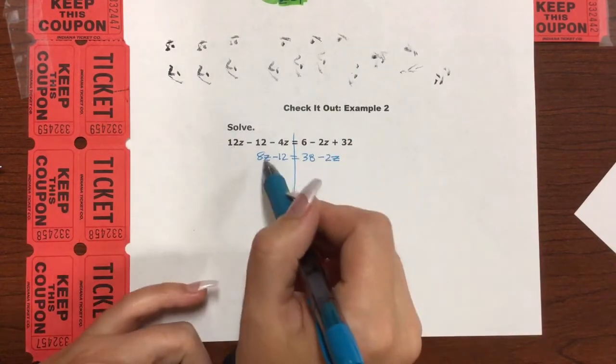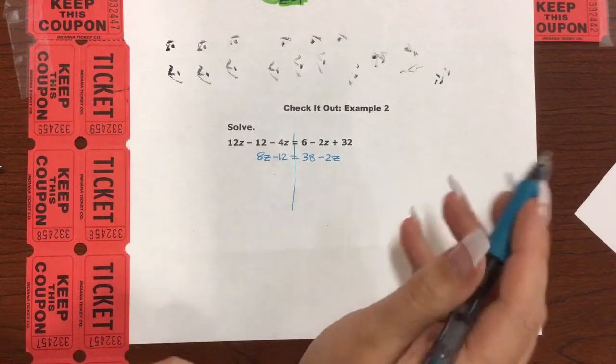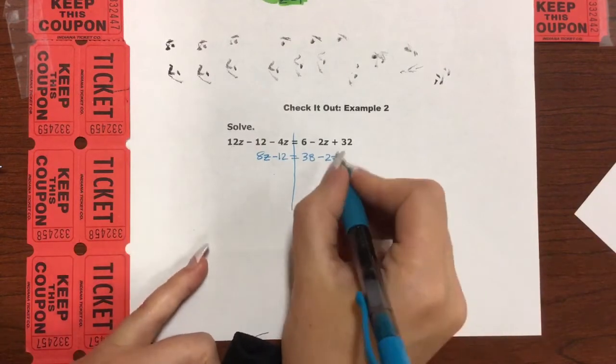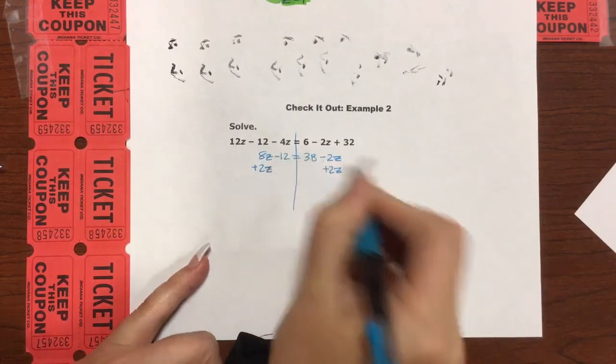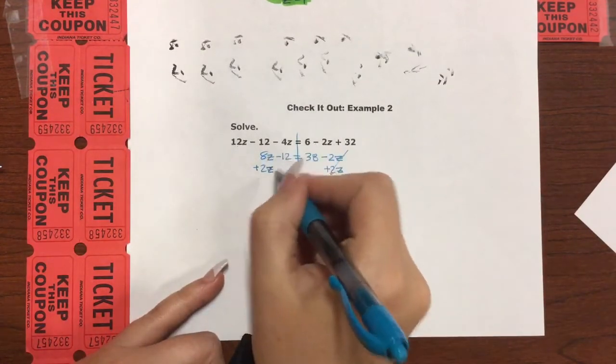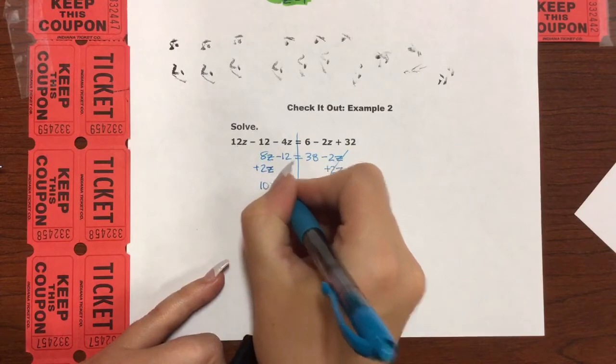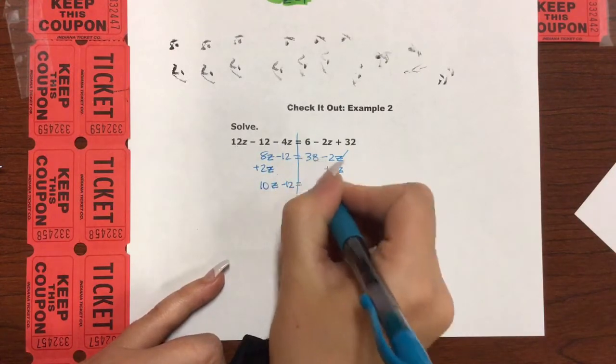It's time to get the variables on the same side. I have 8z and I have negative 2z. Which one is smaller? And I would say negative 2. So the opposite would be 2z, to both sides. It's a positive 2z. And that cancels. 8z plus 2z is 10z minus 12 equals 38. All right.